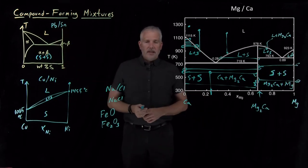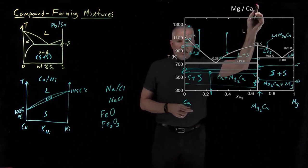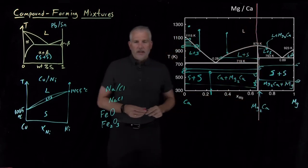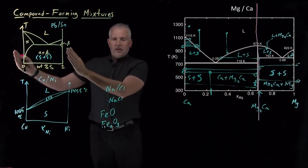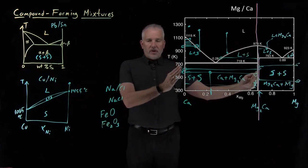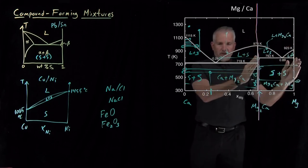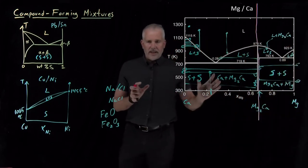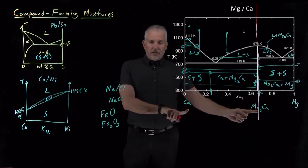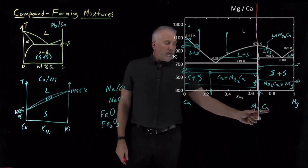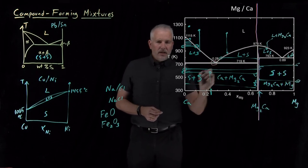The phase diagrams are significantly more complicated for compound-forming substances like Mg₂Ca compared to the non-compound-forming lead-tin case. One way to make them look simpler visually is to divide the diagram with this vertical line — not into equal halves, but cutting at the Mg₂Ca stoichiometric composition. The left half then looks like the phase diagram for mixtures of calcium and Mg₂Ca, and the right half represents mixtures of Mg₂Ca with pure magnesium. This is somewhat like taking two separate solid-liquid phase diagrams and placing them side by side, because Mg₂Ca is a stoichiometric compound between calcium and magnesium.